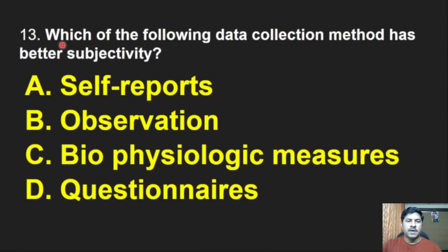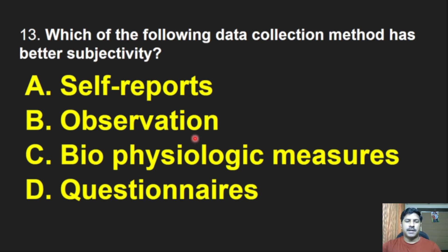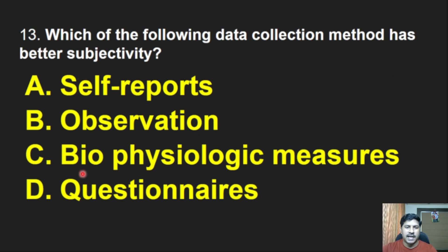Thirteenth question: Which of the following data collection methods has better subjectivity? Options: self-reports, observation, biophysiologic measures, questionnaires. The correct answer is biophysiologic measures. The data collection method with better subjectivity is biophysiologic measures.